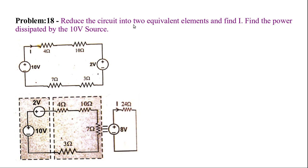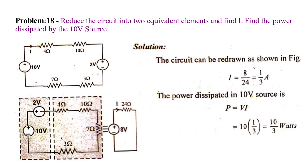Simplify the circuit. Reduce the circuit into two equivalent elements and find I. The two equivalent elements are equivalent voltage and equivalent resistance. Now we have current. Using V = IR: 8 equals 24I, so I equals 8 divided by 24, which is 1/3 ampere.